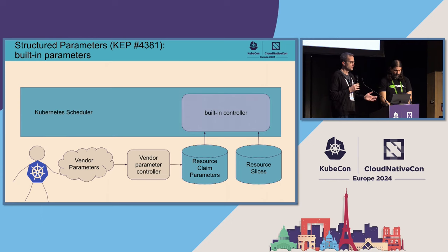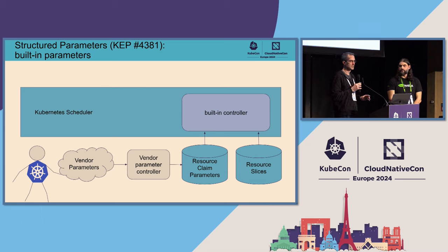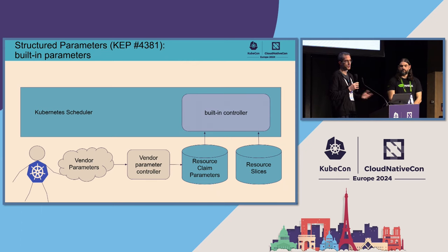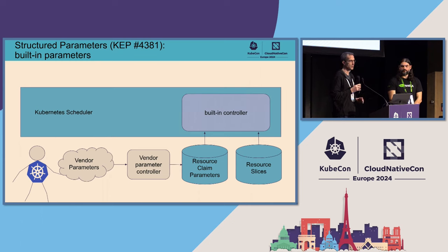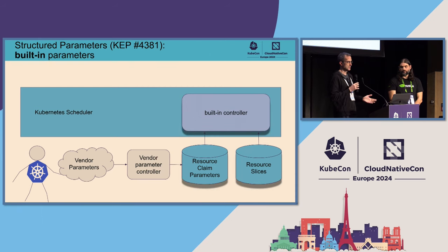The problem with this approach is that the communication between scheduler and DRA driver doesn't work for other Kubernetes components, most notably the cluster autoscaler. The cluster autoscaler operates in read-only mode — it sees the current cluster state and tries to determine through simulation whether adding a node may help get a pod running. But it can't ask the DRA driver. There were ideas about plugging vendor logic into the cluster autoscaler binary, but that would imply recompiling it, which is often not an option. Or doing remote procedure calls, which are also difficult from a performance perspective. So after discussions with the SIG and the community, we came up with the idea of built-in parameters.